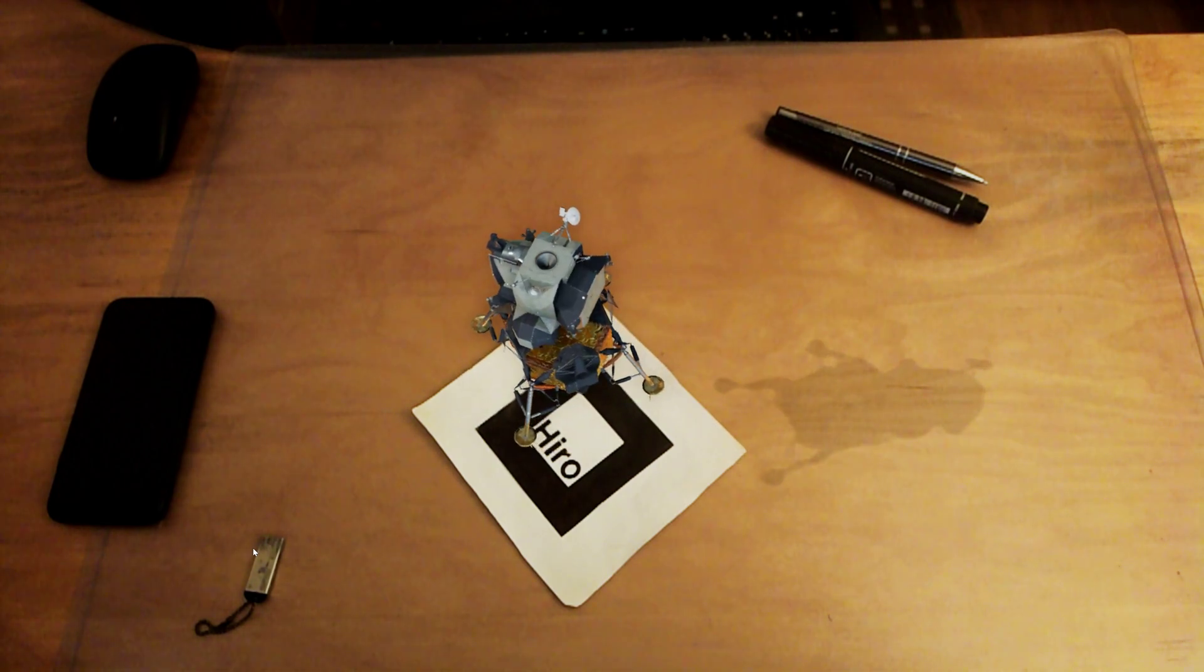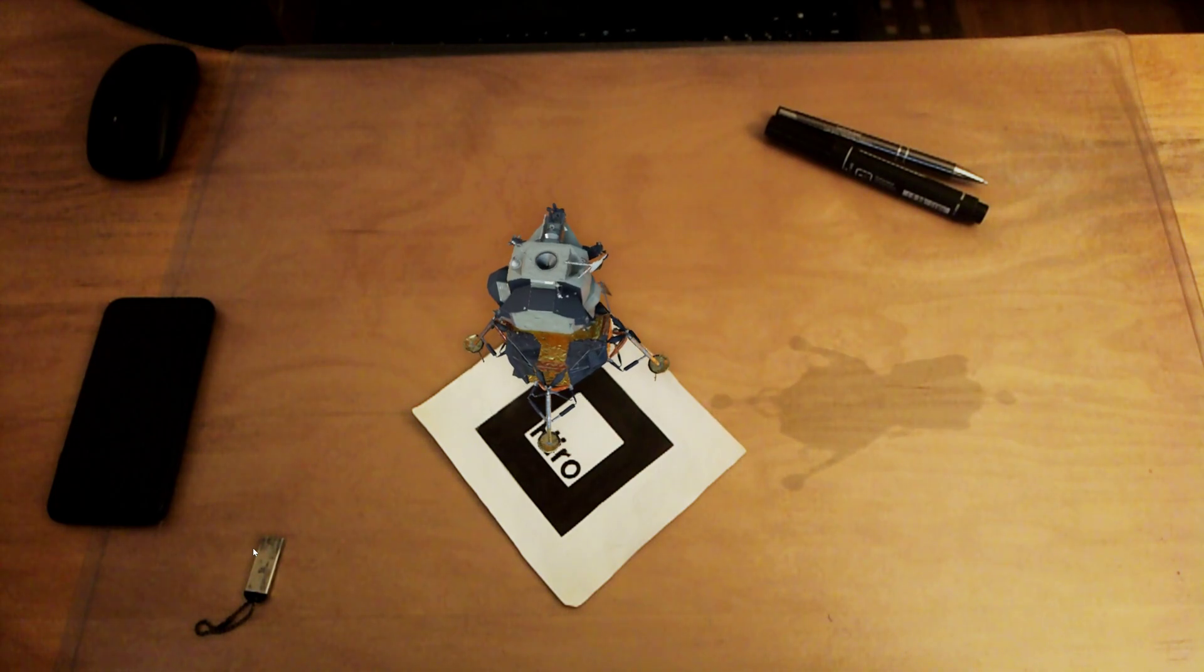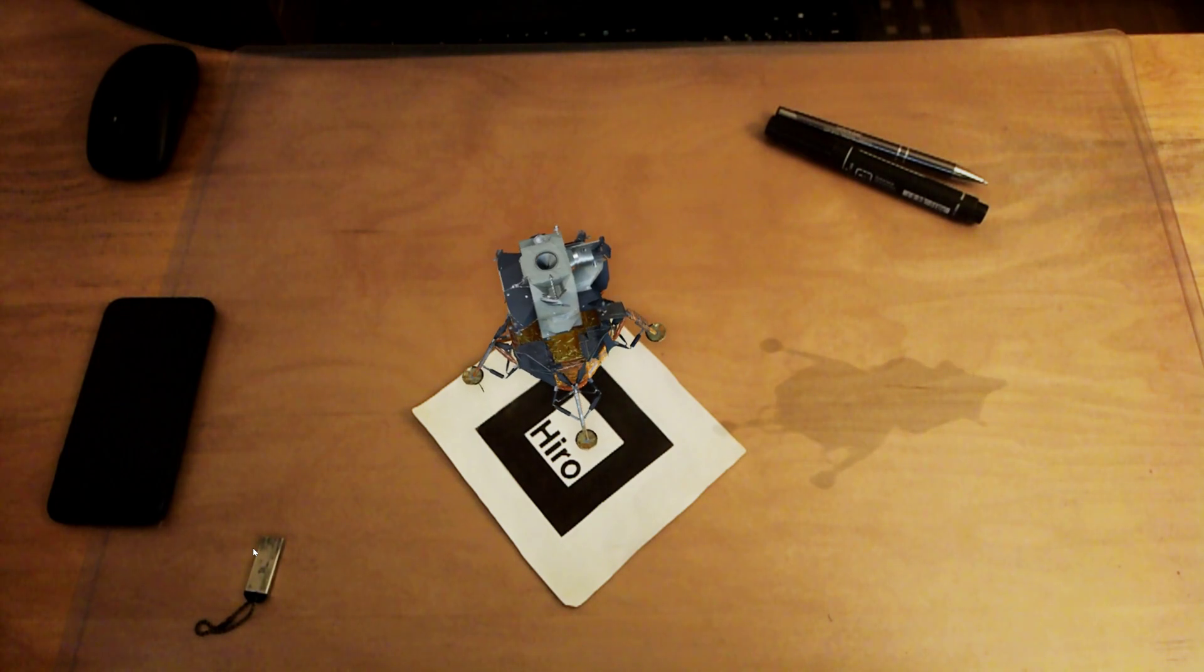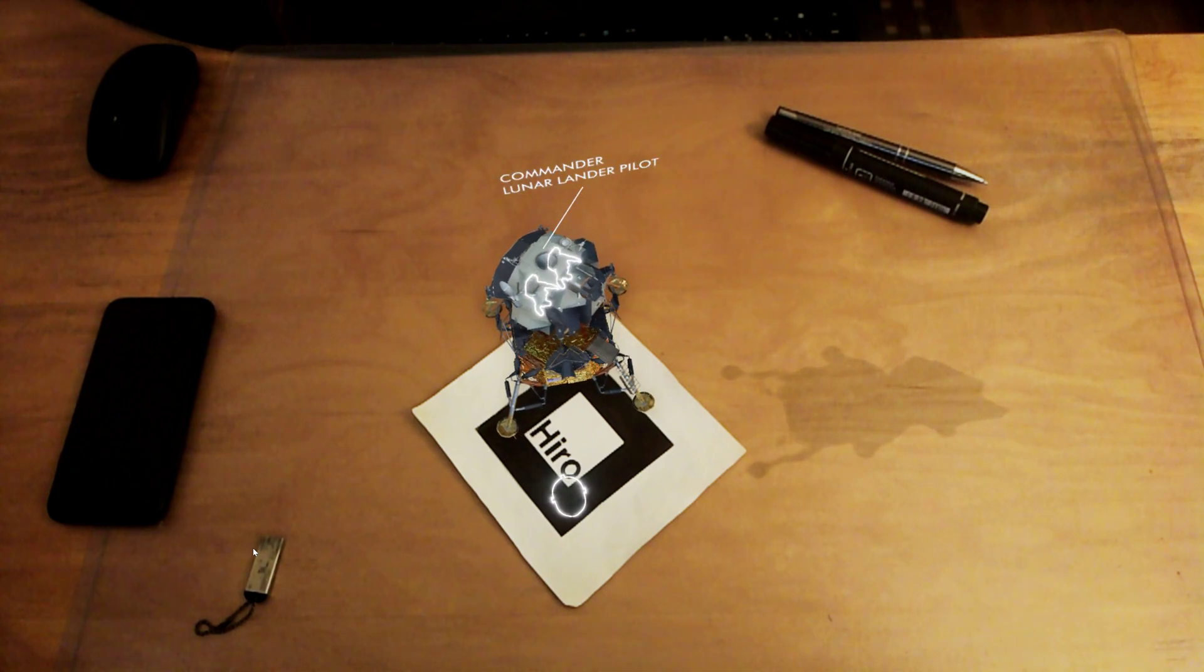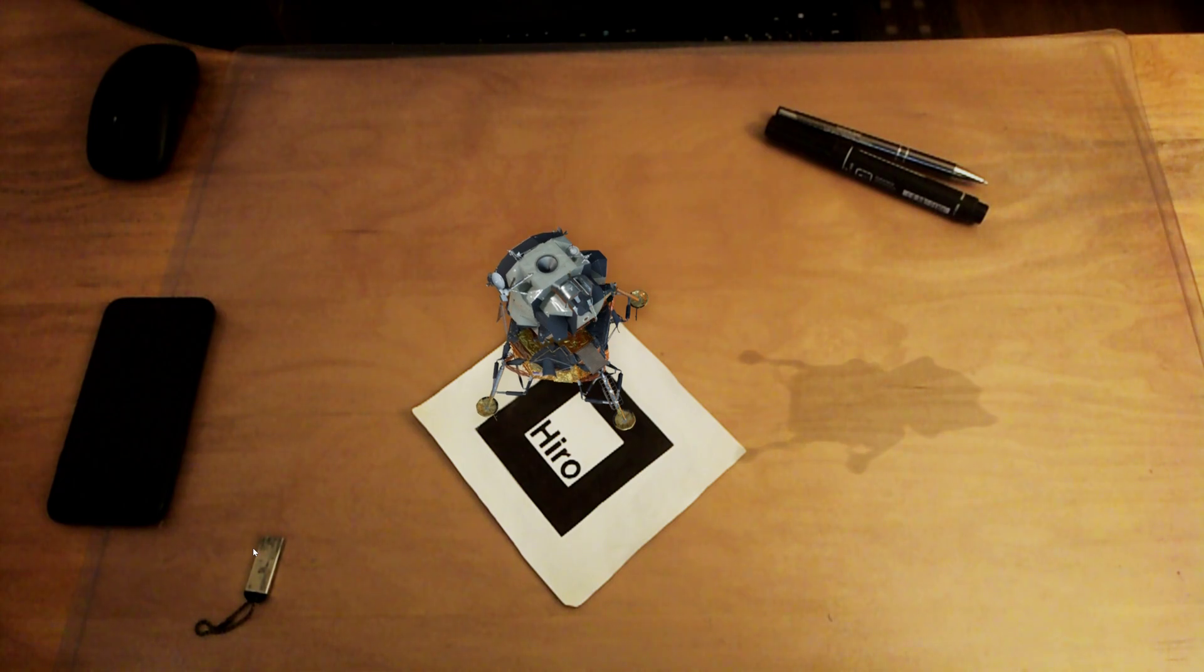As the lunar module was designed to fly in the vacuum of space, there was no need for it to be aerodynamic. Weight was kept to an absolute minimum. The walls of the cabin were no thicker than a few sheets of aluminum foil. The astronauts didn't even have seats and piloted the ship standing upright in what was essentially a controlled fall from orbit.